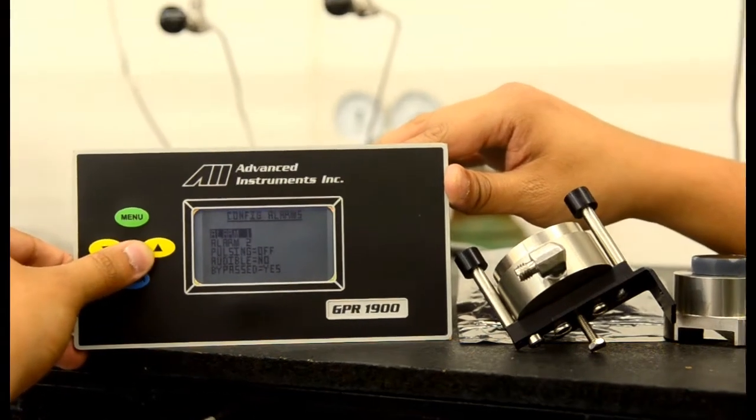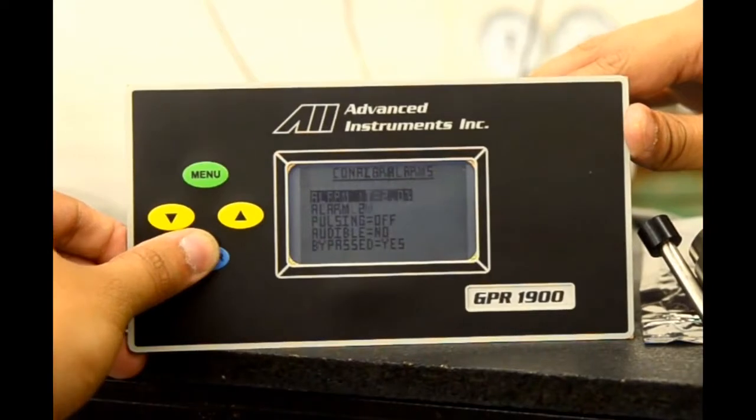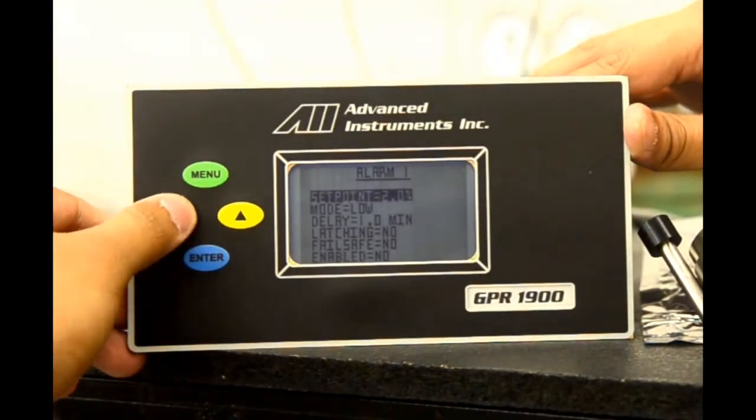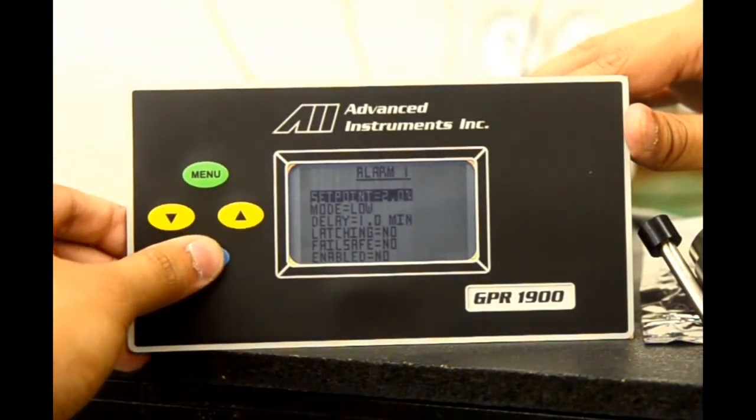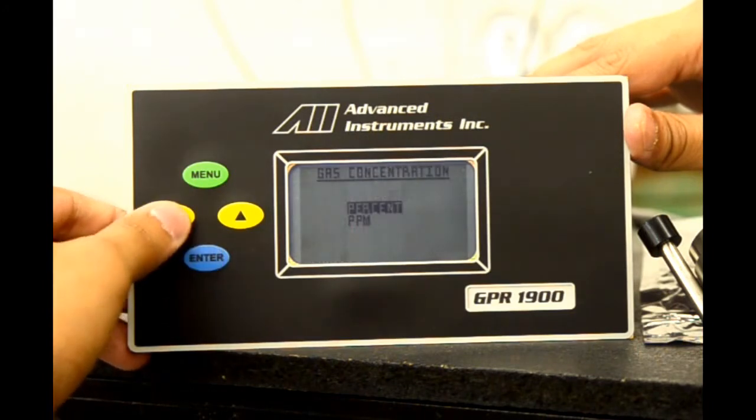We will now configure alarm one. We select enter on alarm one and are taken to the alarm one main menu. Here we see set point, mode, delay, latching, fail safe, and enabled.